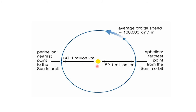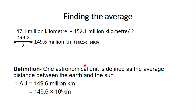So, you get two different distances. They just calculated the average — adding the two distances and dividing by two. They added 147.1 million kilometres and 152.1 million kilometres, which gives 299.2, divided by two, to get an average of 149.6 million kilometres.